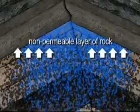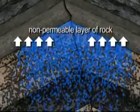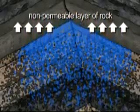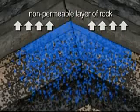Trapping takes place when the migrating fluids and vapors reach a non-permeable layer of rock and cannot migrate any further. These trapped molecules slowly begin to accumulate within the porous rock formations, forming a reservoir.